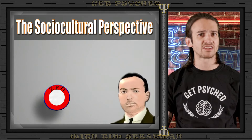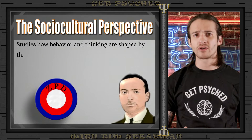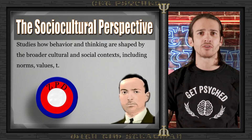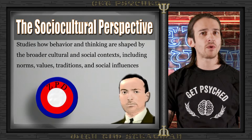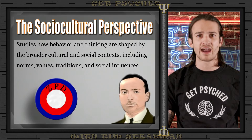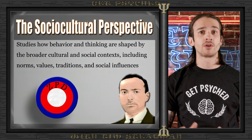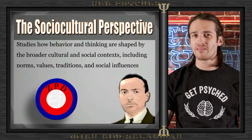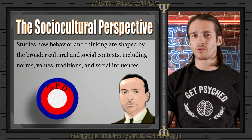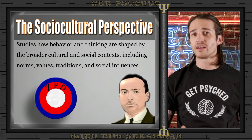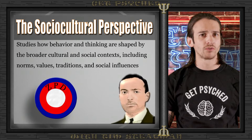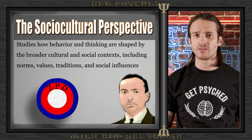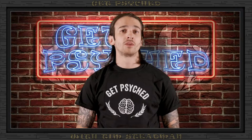The socio-cultural perspective, which emerged in the mid-20th century and was heavily influenced by psychologists such as Lev Vygotsky, focuses on how social interaction and cultural context play critical roles in our development. This approach explains behavior as heavily influenced by the social environment and cultural norms, suggesting that our interactions and the cultural groups to which we belong shape our behaviors and psychological processes.